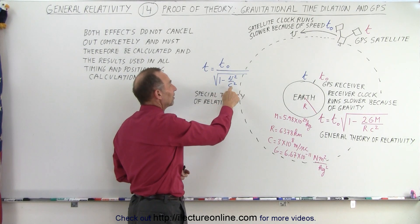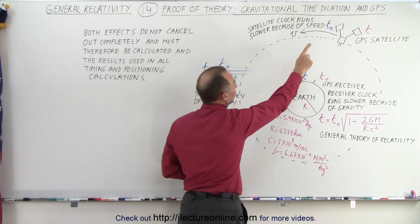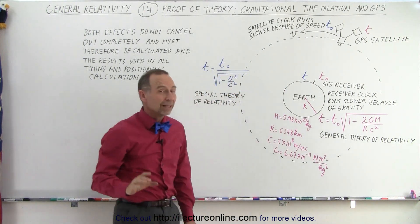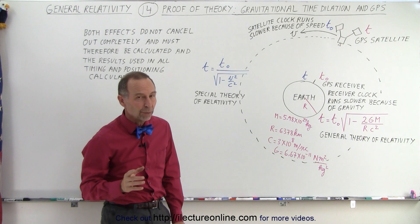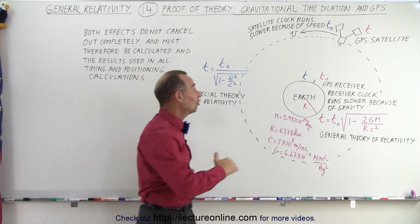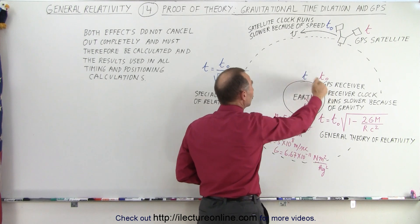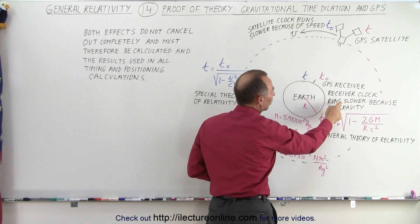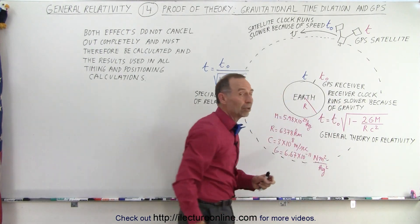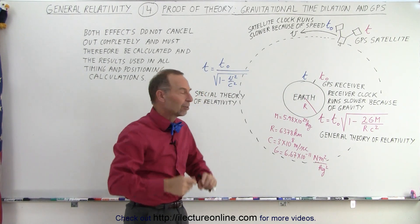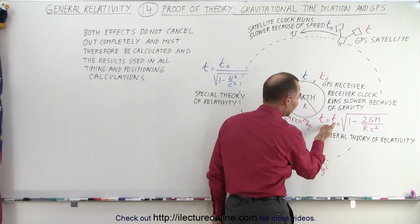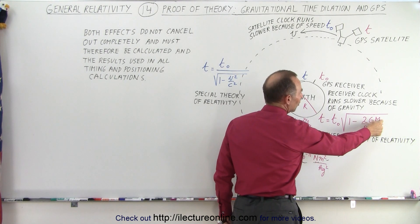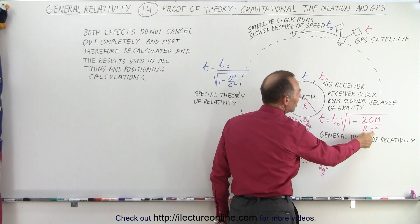But that's not the only thing. There's another aspect we have to deal with, which is called the general theory of relativity, which says that the gravitational force close to earth is greater than the gravitational force where the satellites are. And therefore, where the GPS receivers are, the time runs slower than the clocks on the satellite. So it's kind of a reverse action. And the equation we need to use to calculate the difference in time is right here, where G is the gravitational constant, M is the mass of the earth, R is the radius of the earth, and C is the speed of light.